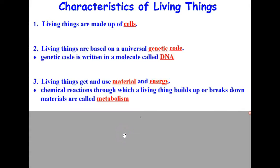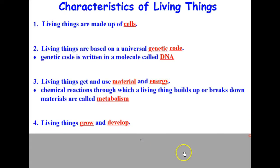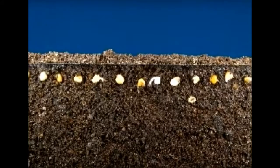The fourth characteristic all living things have in common is that living things grow and develop. Every organism has a certain pattern of growth and development. During development, a single fertilized egg divides again and again. As all these cells divide, they differentiate, which means they begin to look different from one another and to do different jobs. Take a look at this neat video clip on radish seeds sprouting and developing.